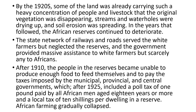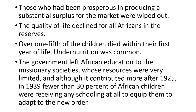After 1910, the people in the reserves became unable to produce enough food to feed themselves. You had soil erosion, deteriorating land, too many people packed into the reserves, and inability to produce one's own food. Taxes were also imposed by the municipal, provincial, and central governments — which after 1925 included a poll tax of one pound paid by all African men aged 18 years or more, and a local tax of 10 shillings per dwelling in a reserve. African farming gradually collapsed under those conditions. Those who had been prosperous in producing a substantial surplus for the market were wiped out, and the quality of life declined for all Africans in the reserves.